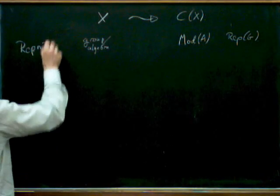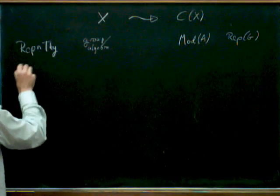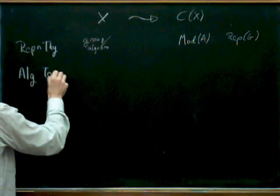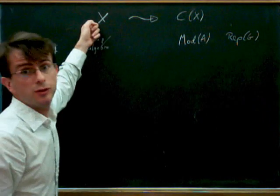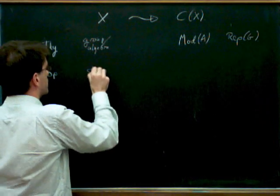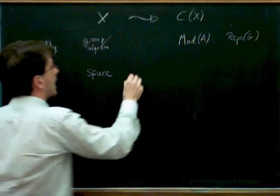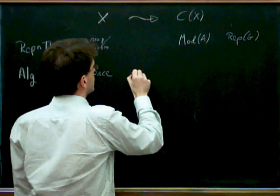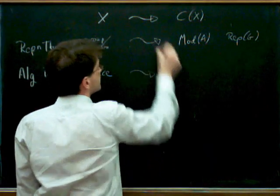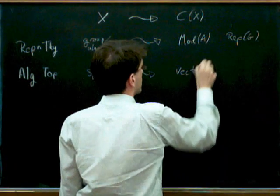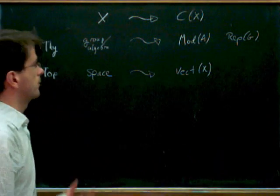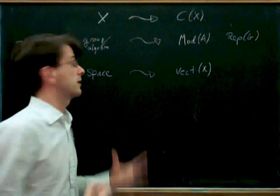If you were not doing representation theory but maybe algebraic topology, the kind of X's that you deal with are spaces — a topological space — and you would associate to that space the vector bundles. So you would take the vector bundles over X.